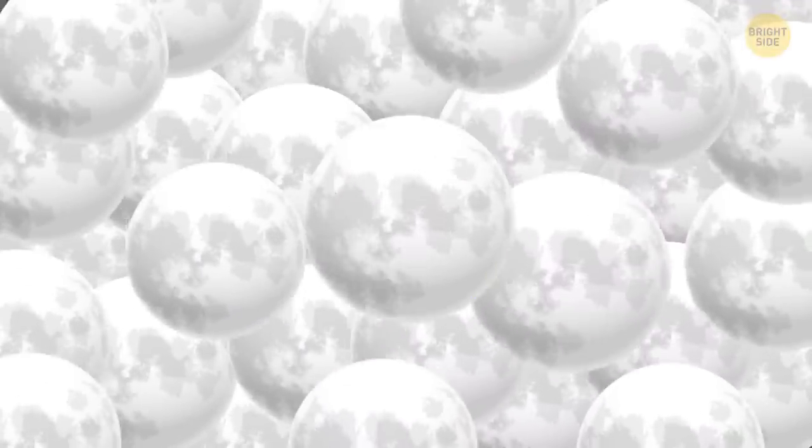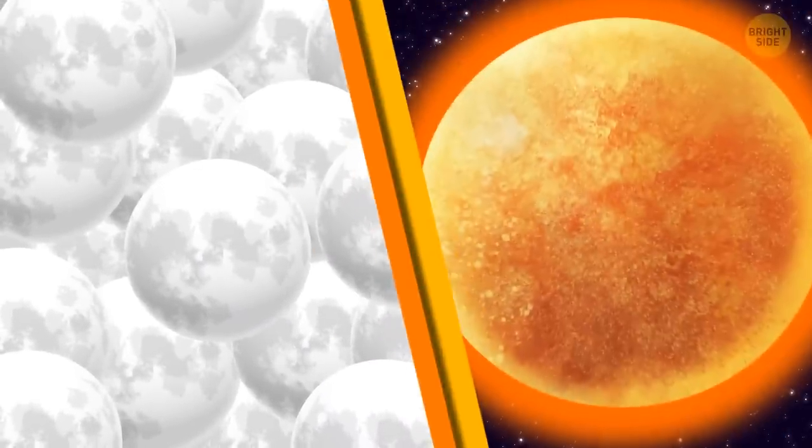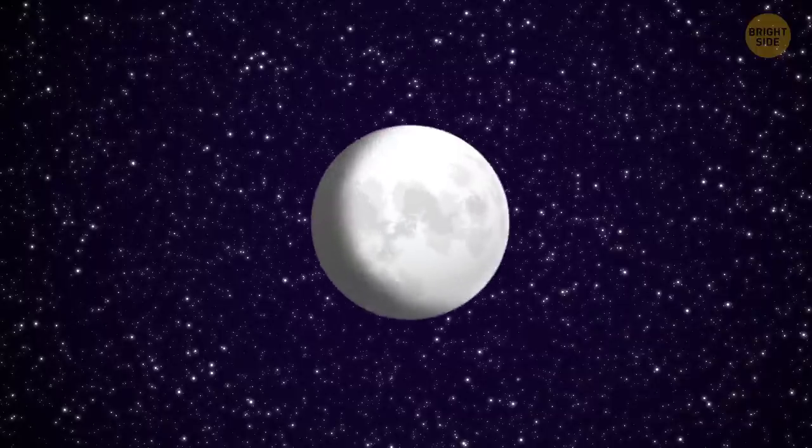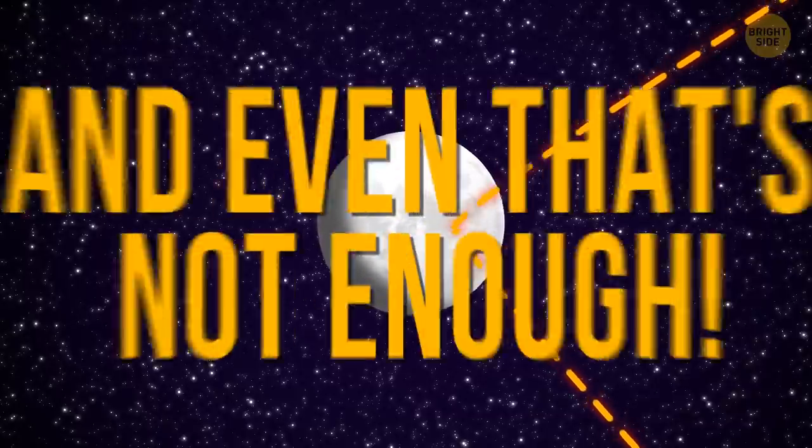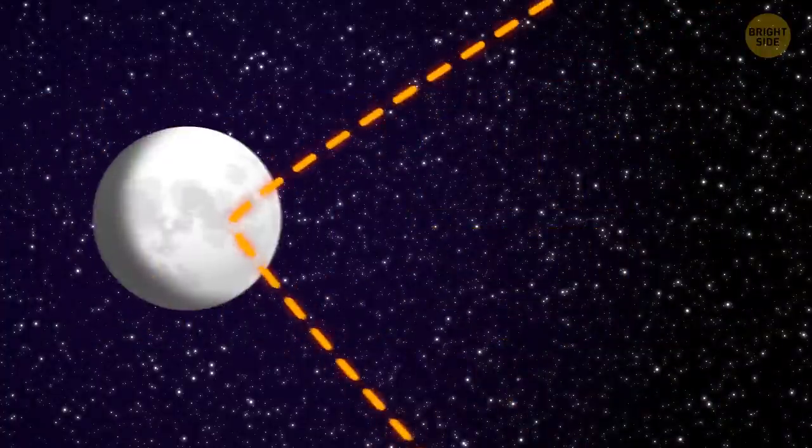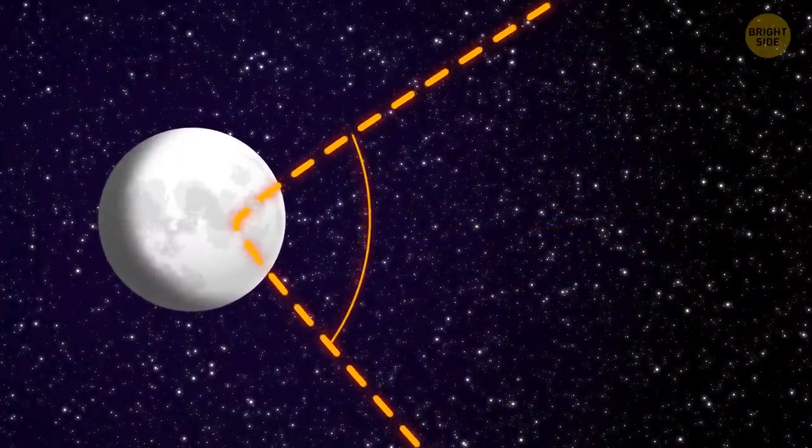You'd need 400,000 moons to reach the level of brightness the sun has. Sounds a lot at first, but the moon only reflects the light coming from the sun. It doesn't make its own. And even though that's not enough, its brightness depends on the exact angle between the sun, moon, and the Earth.